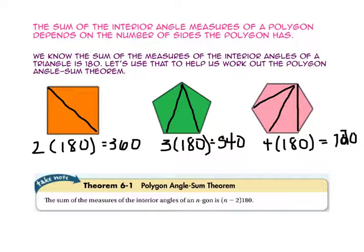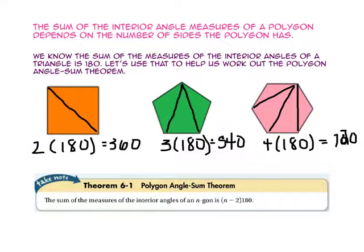Notice that the number of triangles in each polygon is two fewer than the number of sides. In the quadrilateral there are two triangles and four sides; in the pentagon, three triangles and five sides; and in the hexagon, four triangles and six sides. There are always two fewer triangles than there are number of sides. This leads us to the polygon angle sum theorem, which states the sum of the measures of the interior angles of an n-gon is n minus 2 times 180, where n is the number of sides the polygon has.